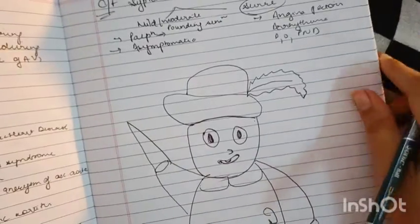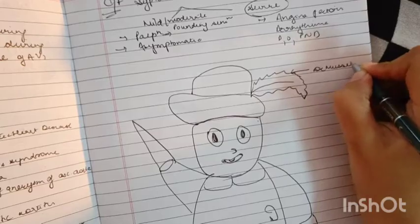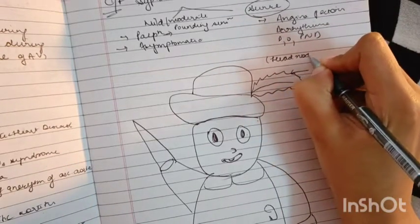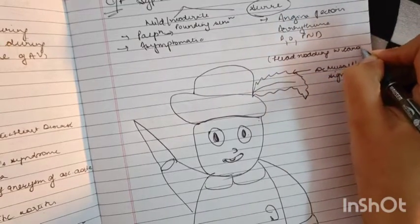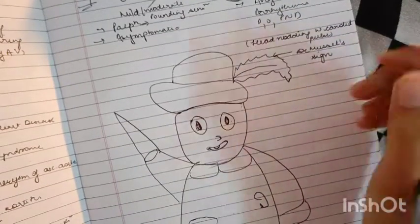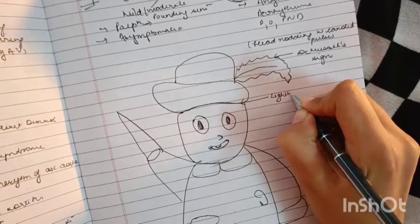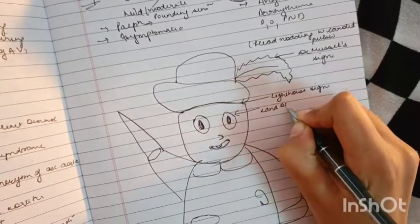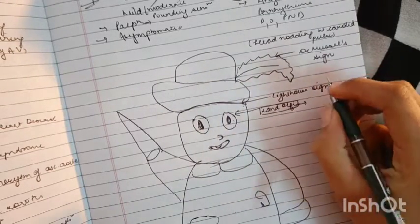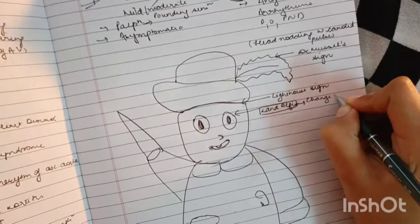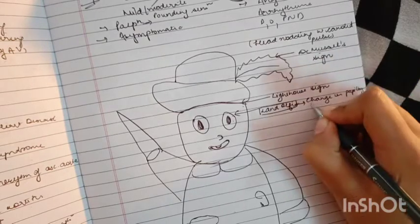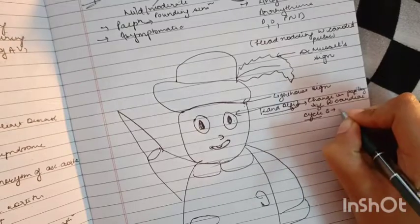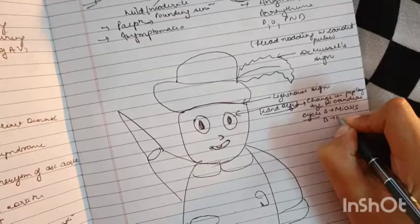So first of all, what we see is over here, DeMussett's sign. This sign refers to the head nodding with carotid pulse. Then we have lighthouse sign. Then we have landolfi sign. Landolfi sign refers to the change in pupillary size with cardiac cycle. That is when systole is going on, we will see miosis. In diastole, we will see mydriasis.